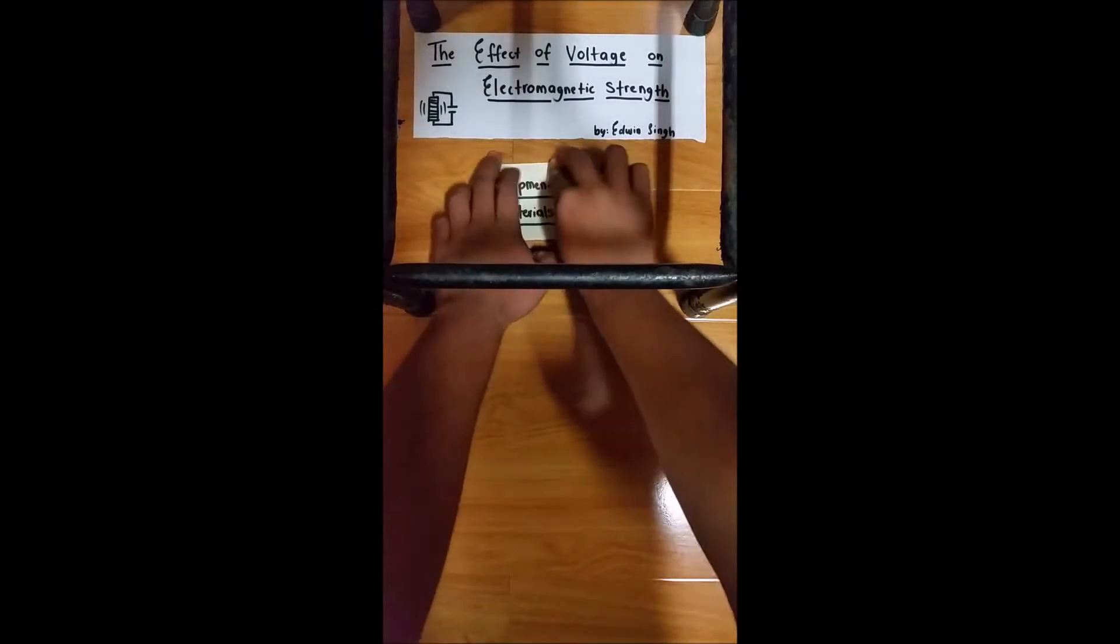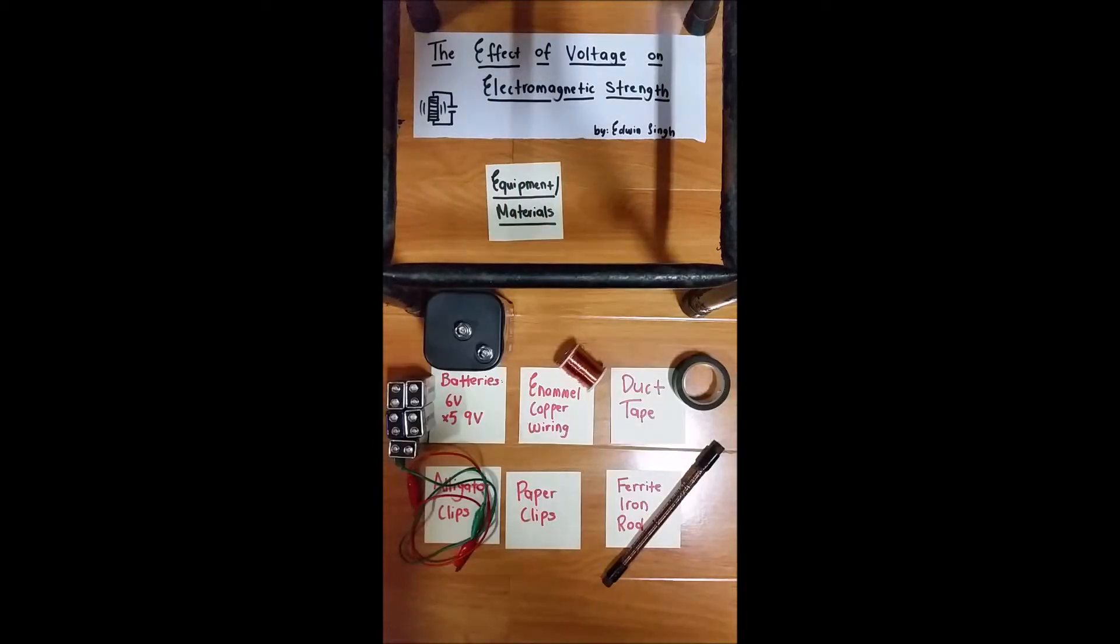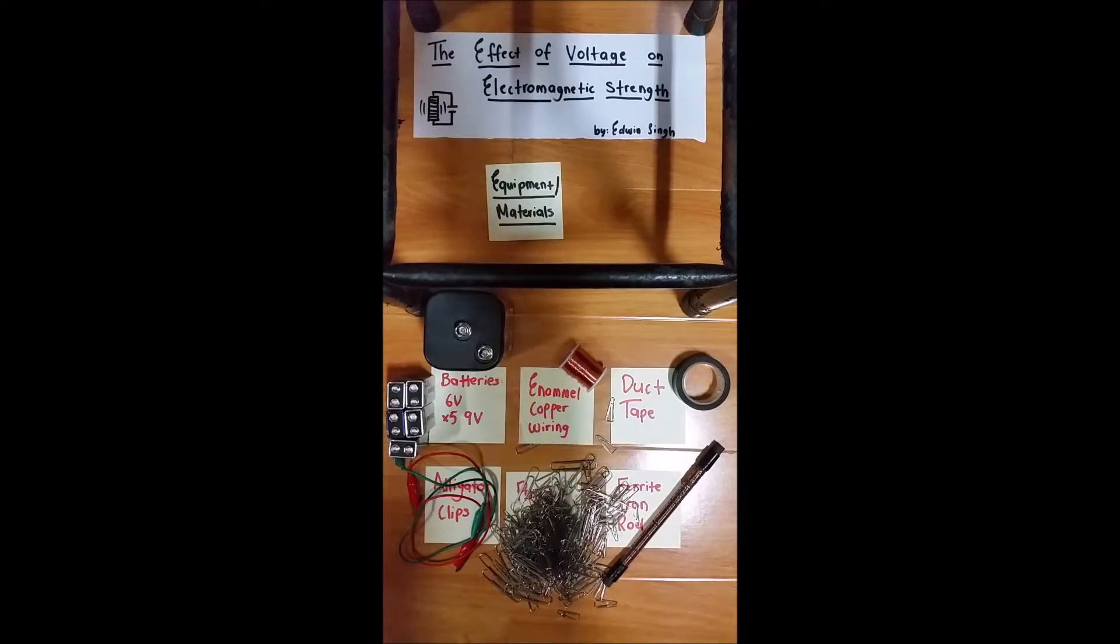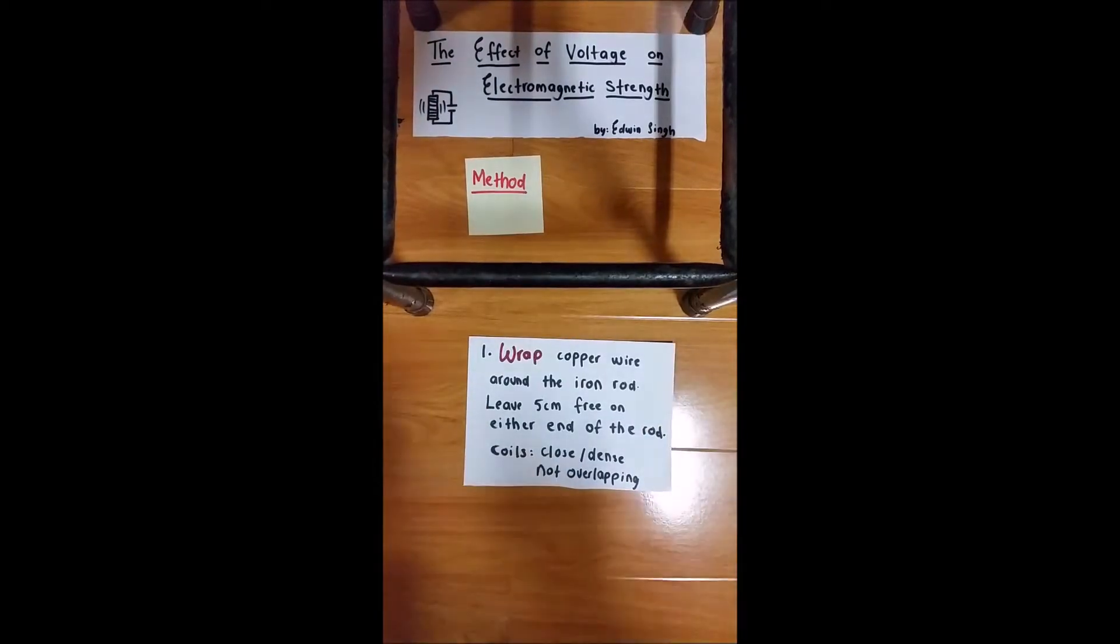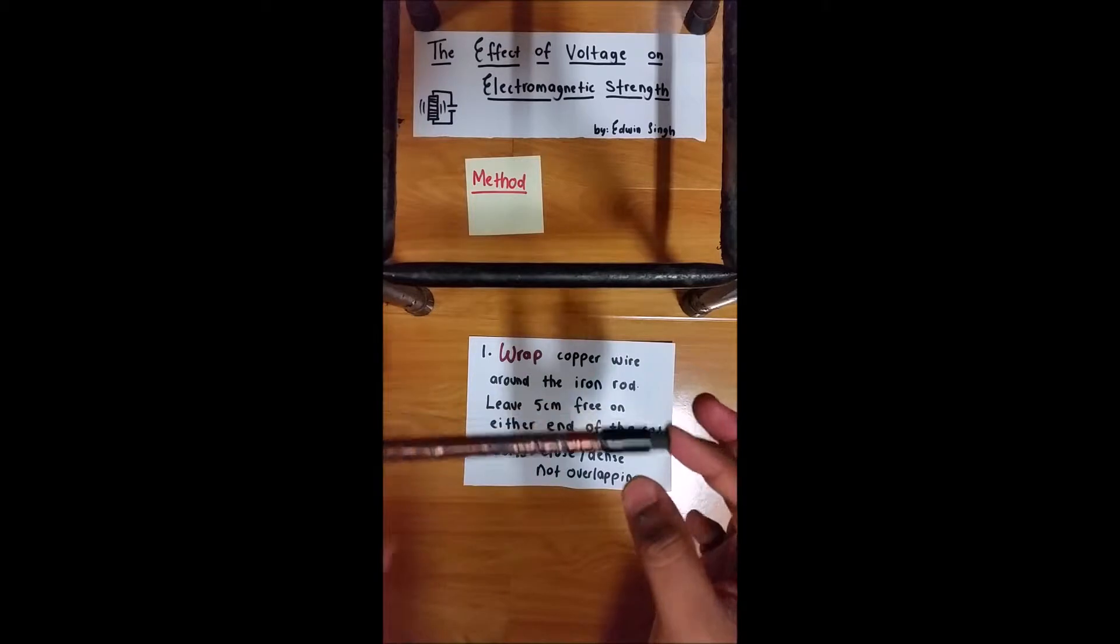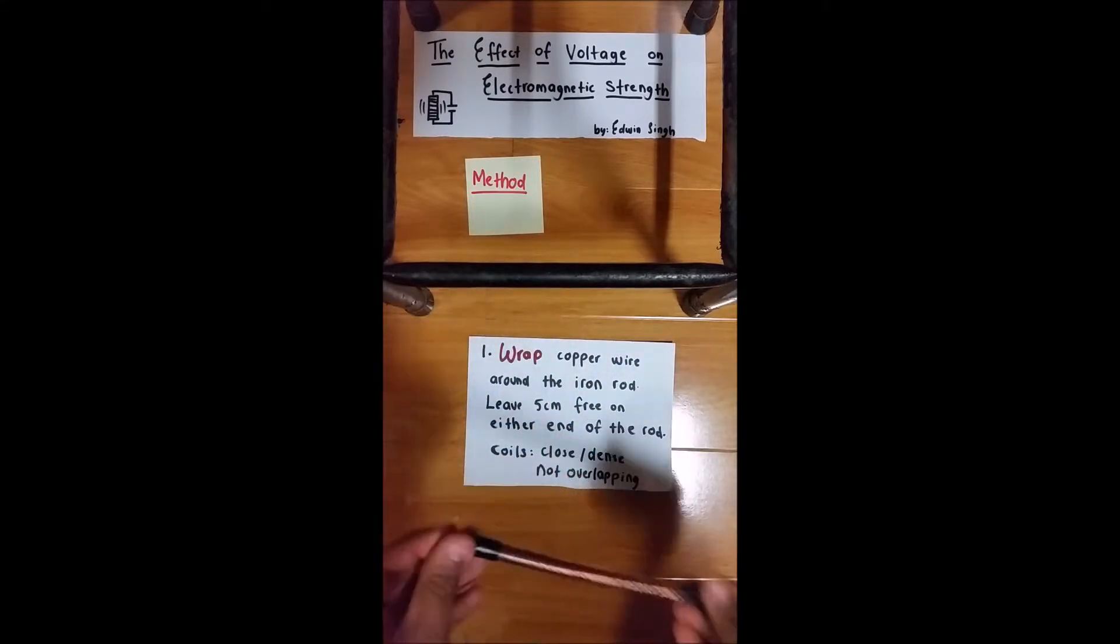The equipment required for this investigation includes the following. Method: Step 1, wrap the copper wire around the iron core, ensuring that there are 5 cm free on either end of the rod.